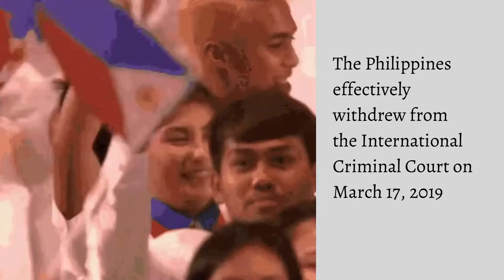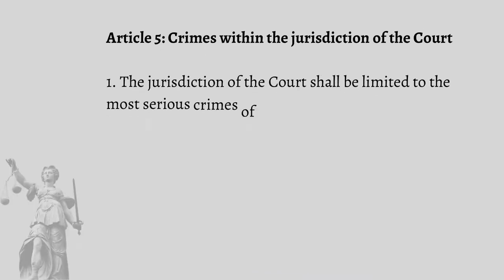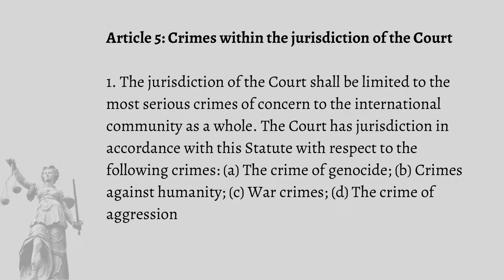The pertinent provisions of the statute begin by discussing what crimes are within the coverage of the ICC's jurisdiction, which is laid down under Article 5. Thereafter, Articles 6 to 8 expound more on the aforementioned crimes individually. Article 5 states that the jurisdiction of the court shall be limited to the most serious crimes of concern to the international community as a whole. The court has jurisdiction with respect to the following crimes: first, the crime of genocide; second, crimes against humanity; third, war crimes; and fourth, the crime of aggression.